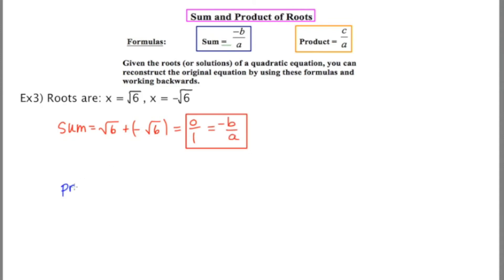Now moving to the product, we're going to be multiplying root 6 and negative root 6. A positive times a negative is a negative, and root 6 times root 6 is just going to be 6, so it's going to be negative 6 over 1. I'm going to set that equal to the formula c over a. Our a's are in agreement, so now it's time to identify a, b, and c. a is 1, negative b is aligned with 0, so b is 0, and c is negative 6.